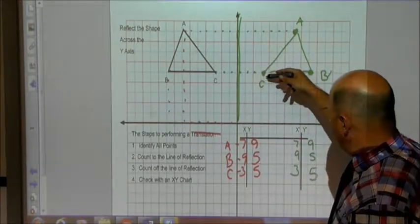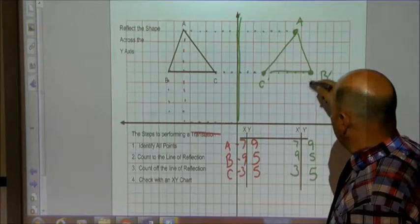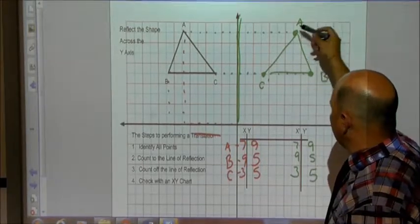So C would be at 3, 5. This is at 9, 5. And this is at 7 over, 9 up.